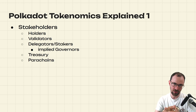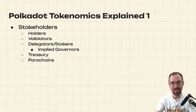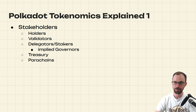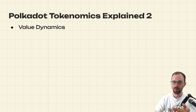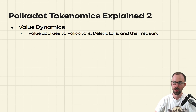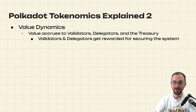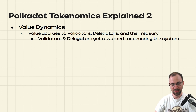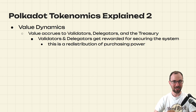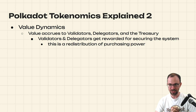Now that we have the stakeholders laid out, let's look at all the dynamics happening between them — basically value dynamics. Where is value flowing to and where is it flowing away from? The first thing we can state is that value accrues to validators, delegators, and the Treasury. Validators and delegators get rewarded for securing the system — this happens in the form of them getting tokens — and this is basically inflation.